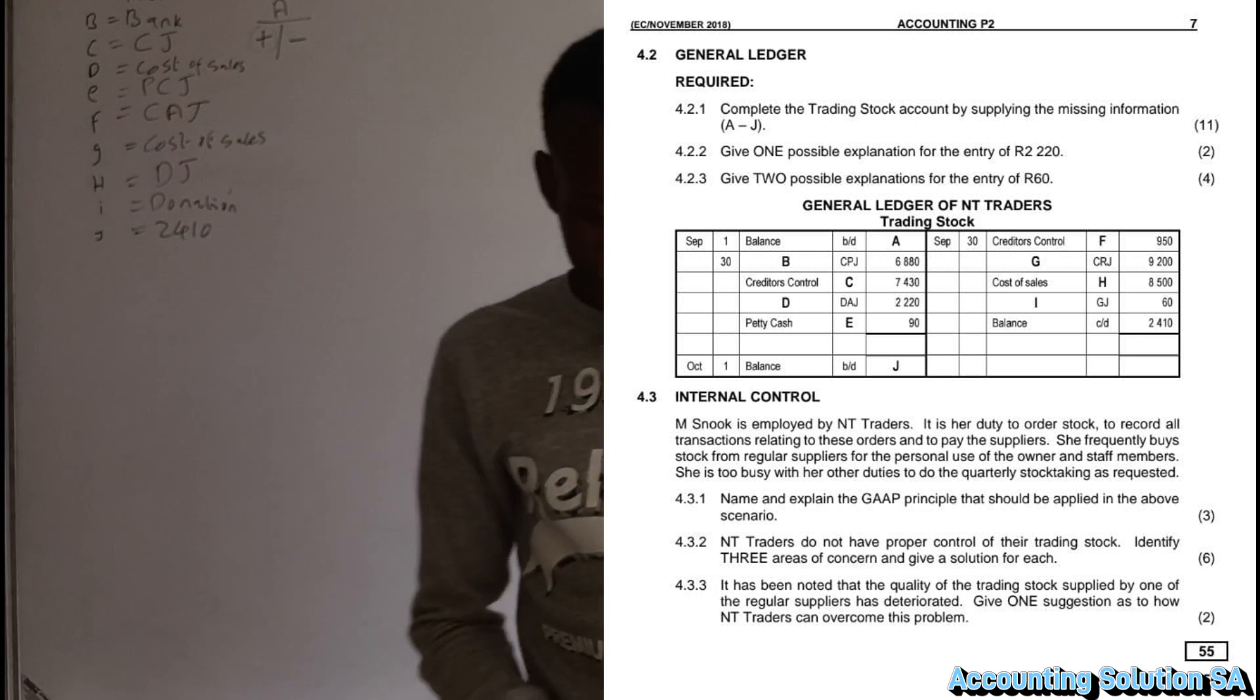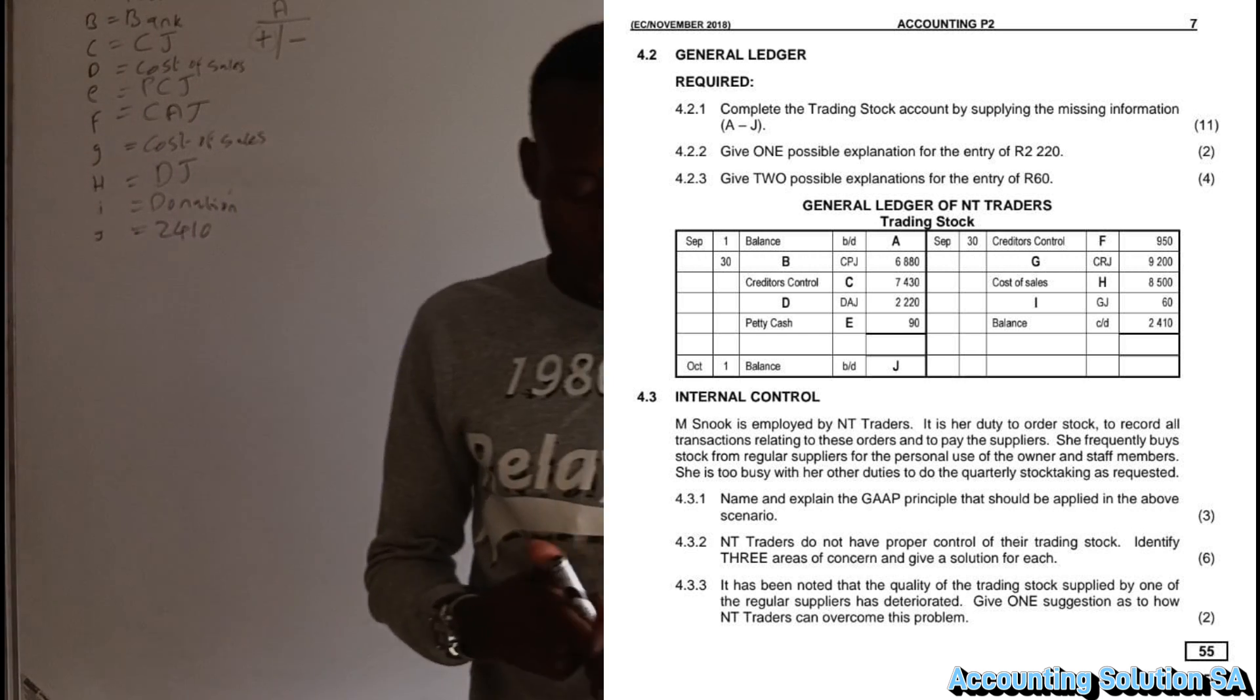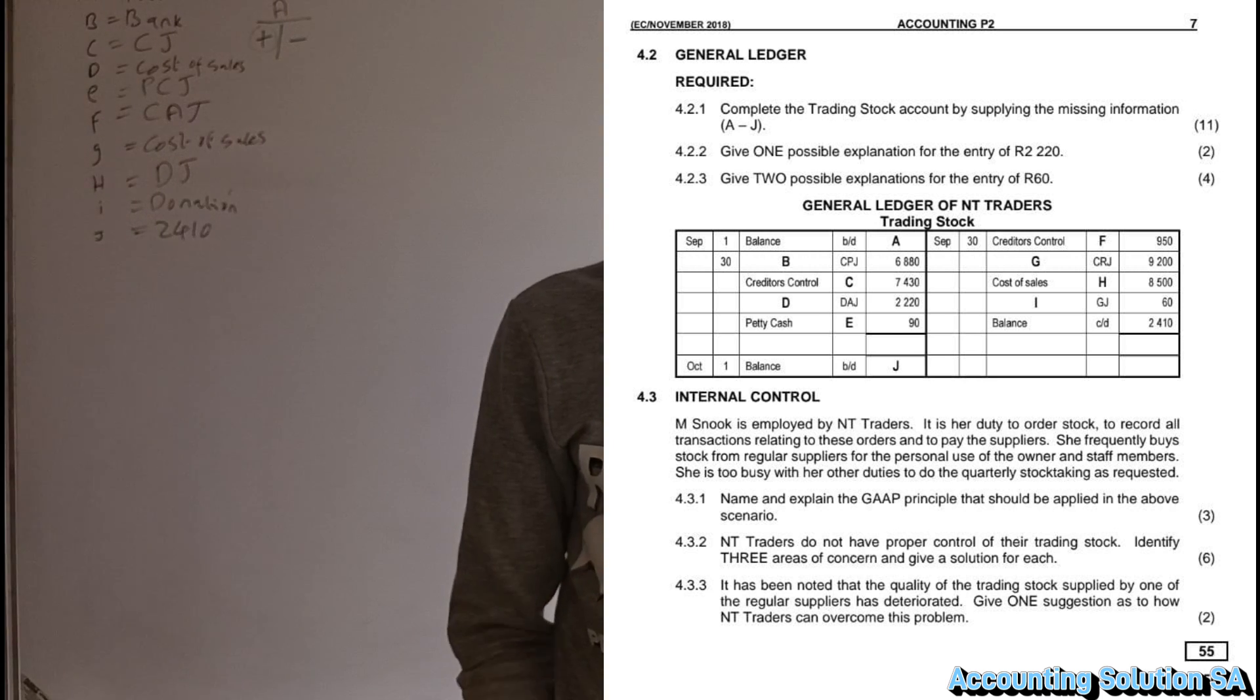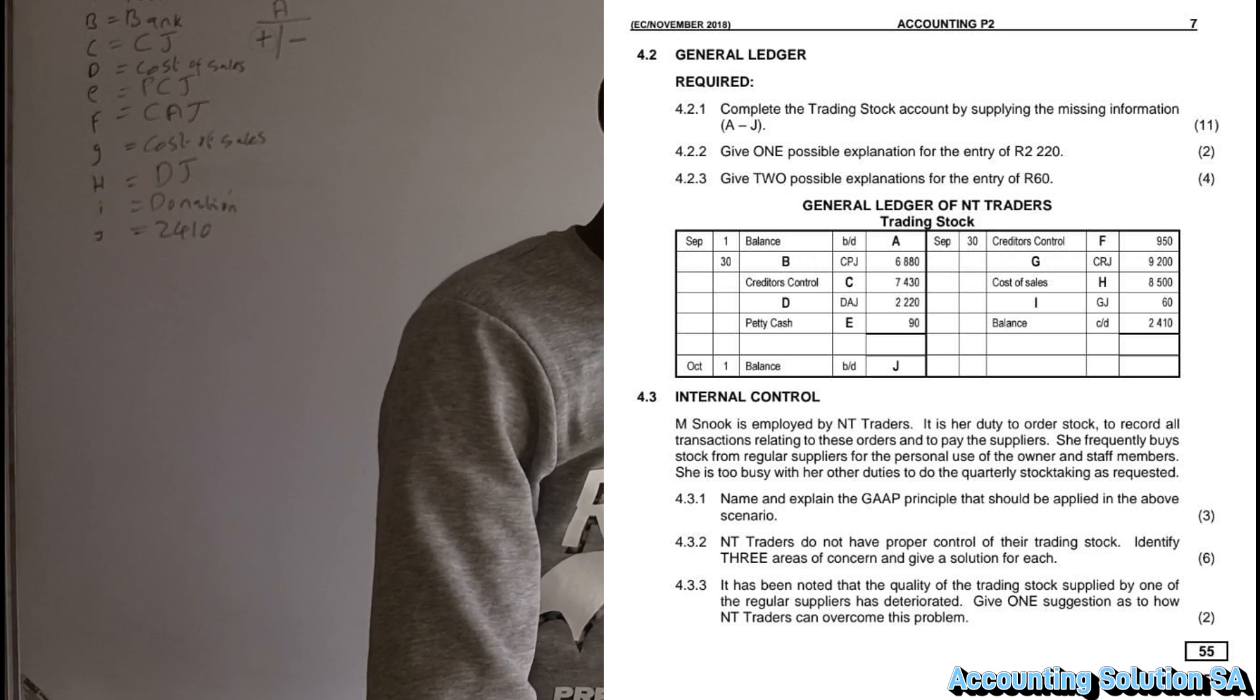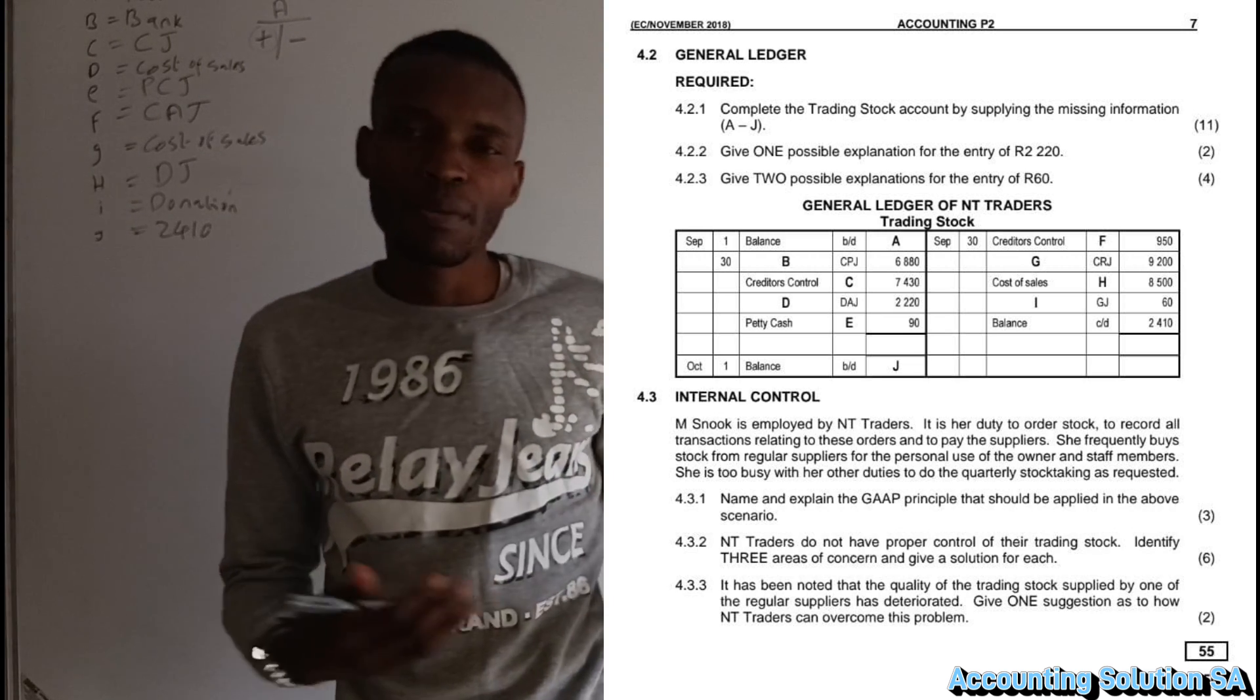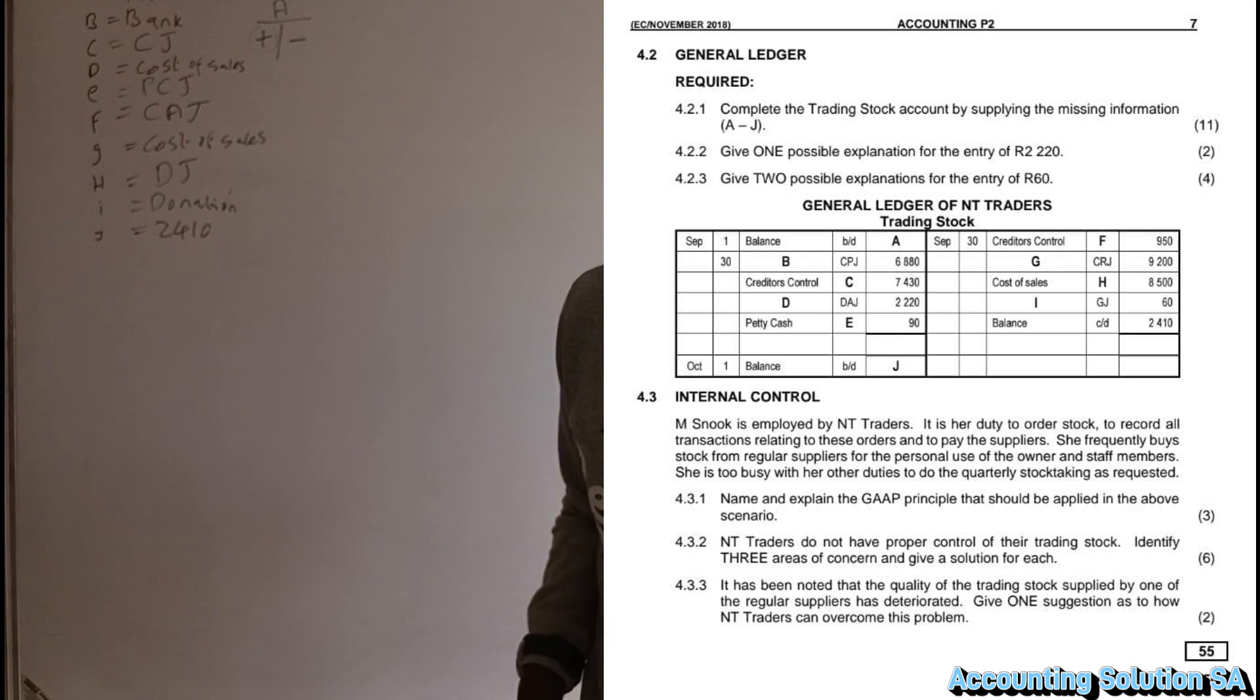4.2.2: Explain one possible explanation of entry of 2,220. If you check, it's for debtor's allowance journal. A customer has returned goods. Why? The possibility reason is that the customer is not happy with the goods that he purchased. Of course, that's why the customer decided to return the goods.